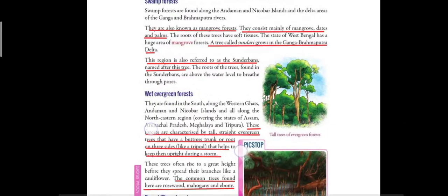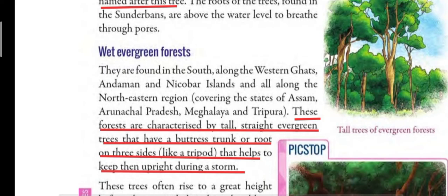Now we will read about wet evergreen forest. Evergreen forest means this type of forest is every time green — the trees appear green all around the year. That is why these forests are known as evergreen forests, because they remain green throughout the year.